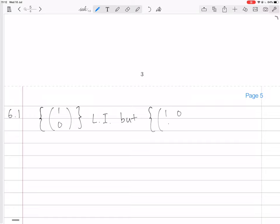But 1, 0 times by the zero matrix, so 0, 0, 0, 0, times 1, 0, gives you the zero vector, right? So that set containing the zero vector is linearly dependent, of course. So that's a counter-example.